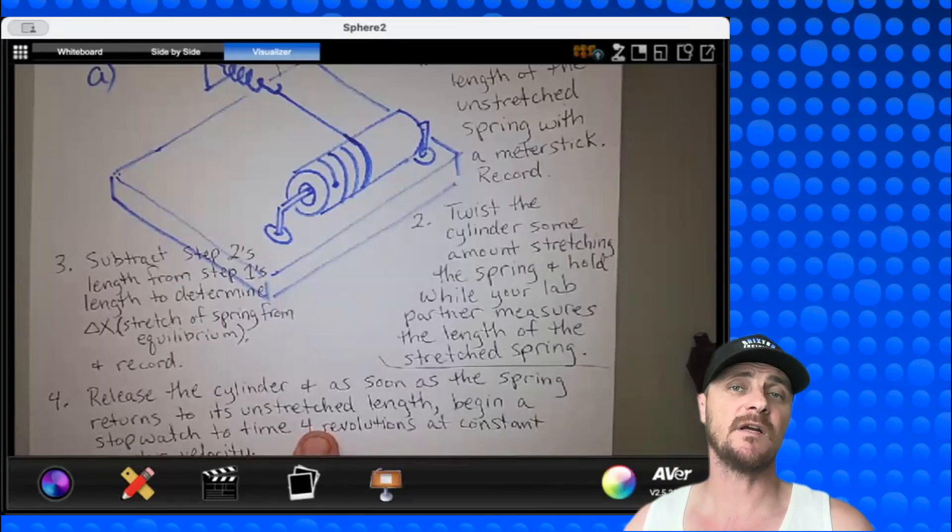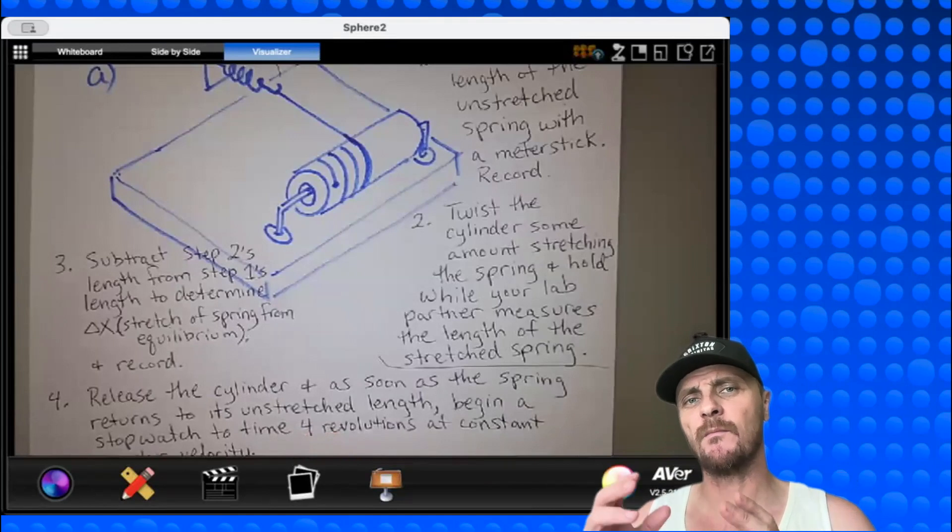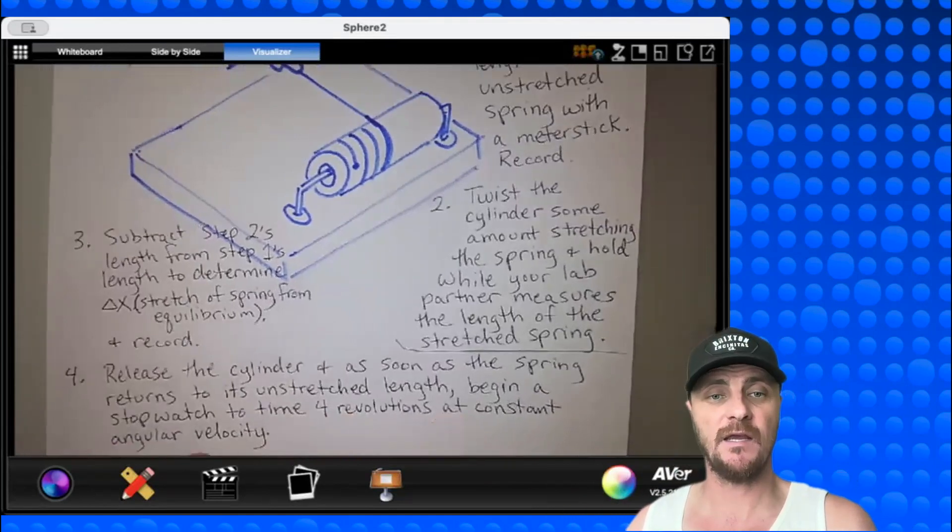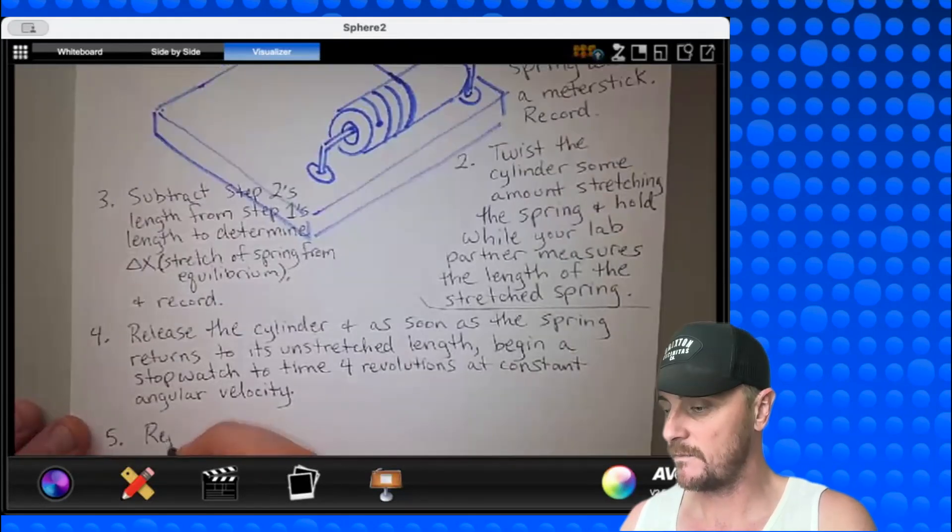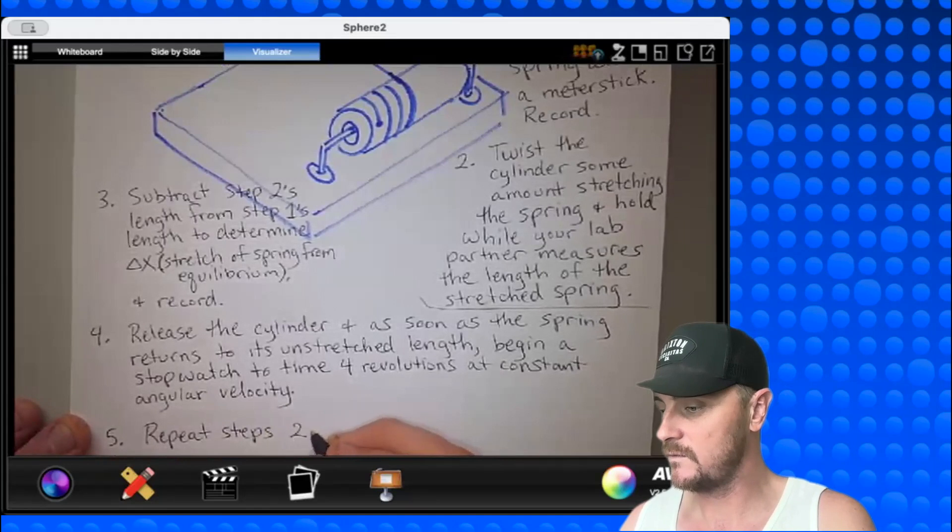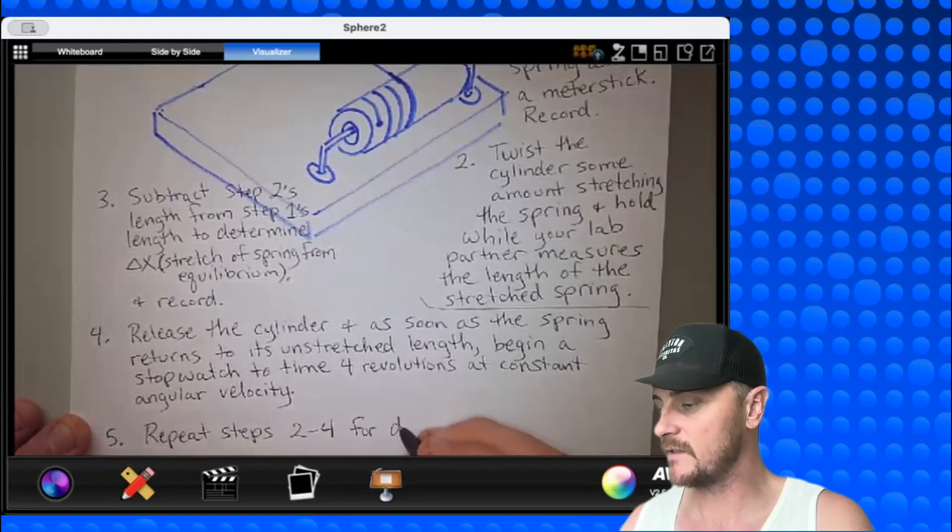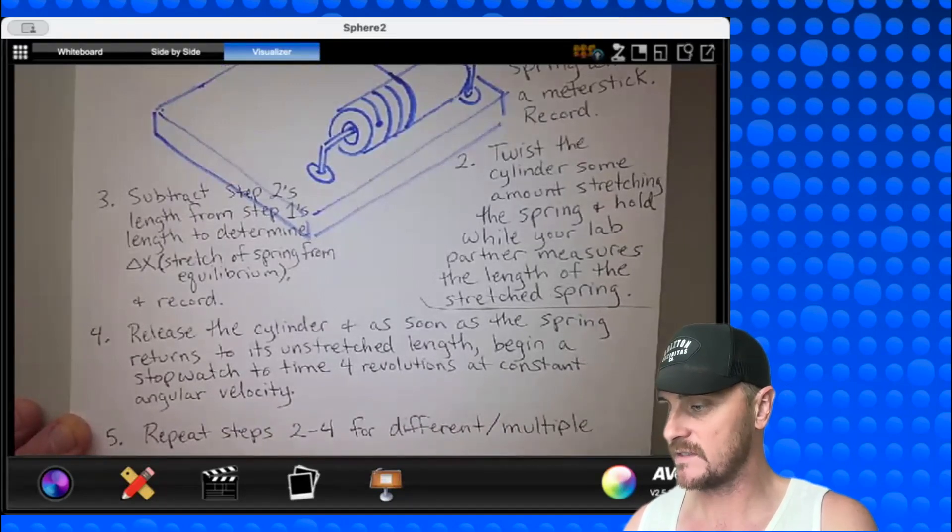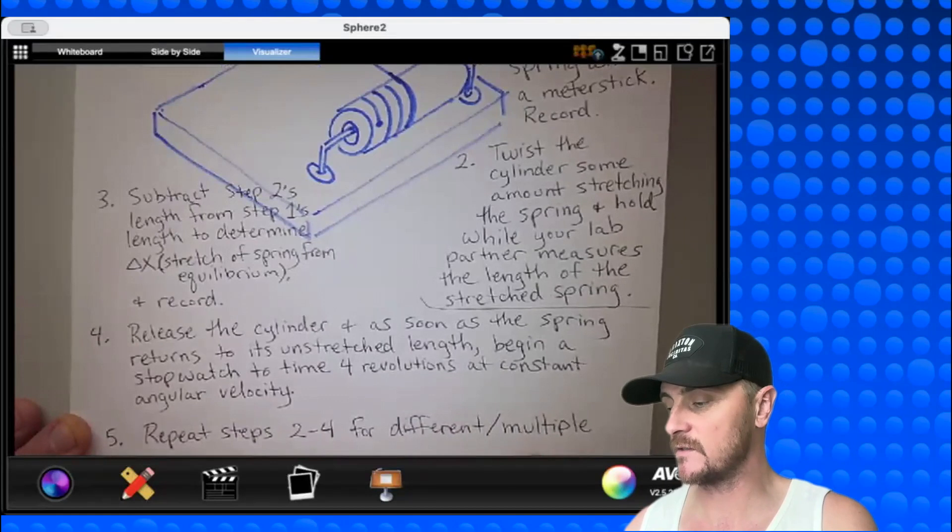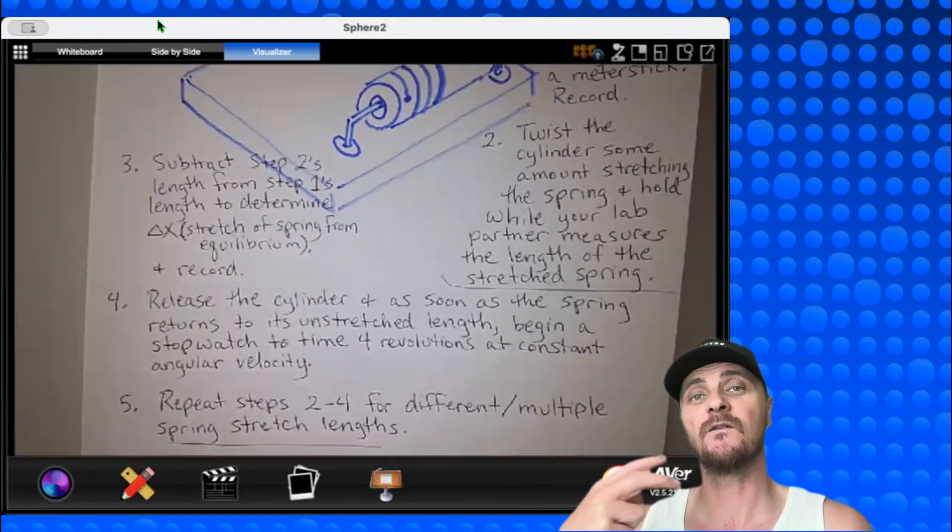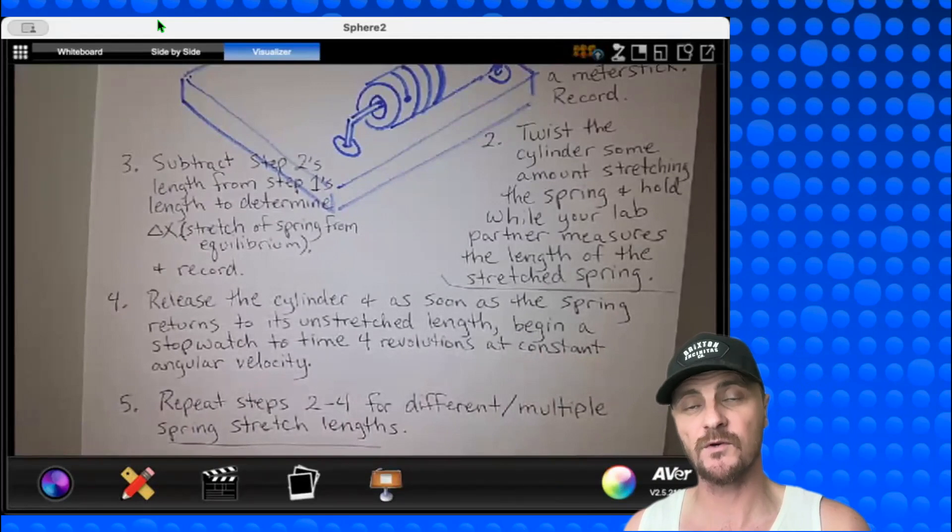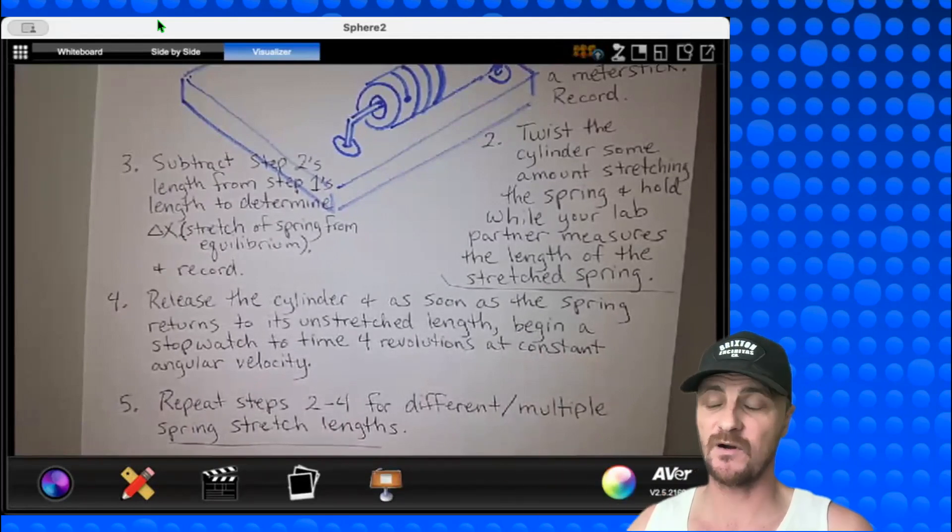I said four revolutions because I believe I could time accurately four revolutions, and I could visually catch that. Hey, maybe you want to say five here. That's fine. Pushing to six revolutions, though, you're getting to that point where there might be tension on the spring, which will ruin that constant angular velocity. Let's move on to step five and be done with part A. Number five, repeat steps two through four, or different, and we should say multiple. This is how we are reducing experimental uncertainty. Spring stretch lengths. And don't forget what we're trying to get from a slope. We're trying to get the spring constant K, and that's the next part.